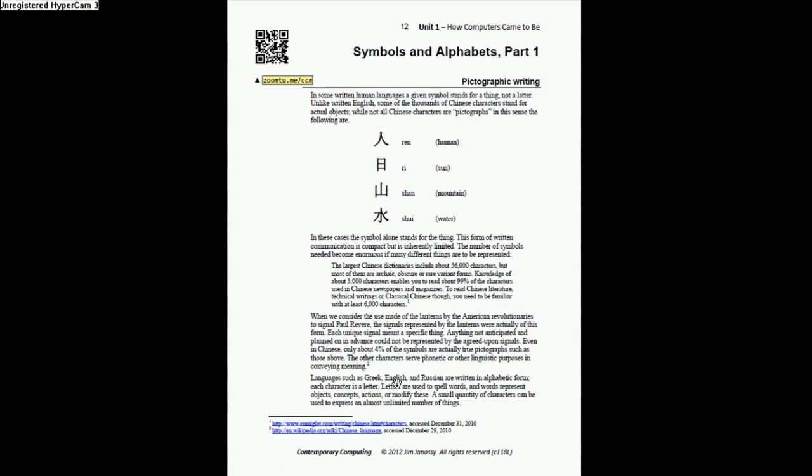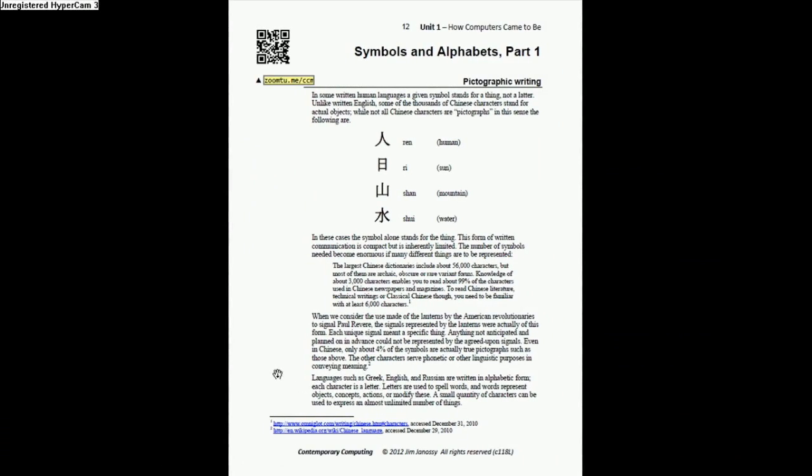Now, other languages such as Greek, English, Russian, and many others are written in an alphabetic way. Here, a limited number of symbols, in our case 26, which stand for things we call letters, can be arranged one after another in groups to spell things out.